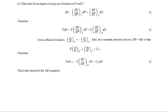Now we will derive the second TDS equation by assuming entropy S as a function of pressure and temperature, that is S is equal to S of P comma T. If we differentiate it partially, we get DS equal to partial S by partial P at constant temperature T, into dP, plus partial S by partial T at constant pressure P, into dT. Therefore, if we multiply T to the above equation, we get TDS equal to T into partial S by partial P, into dP, plus T into partial S by partial T at constant P, into dT. Using Maxwell's relation, partial S by partial P at constant T is equal to minus partial V by partial T at constant P.